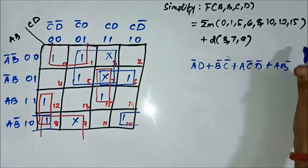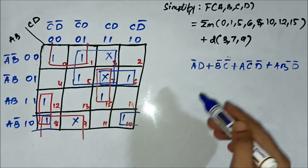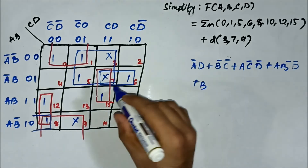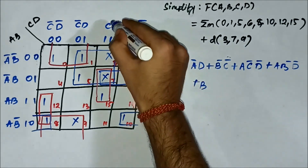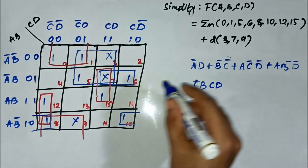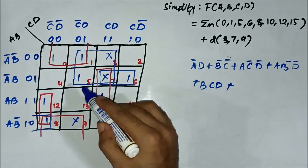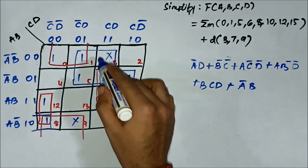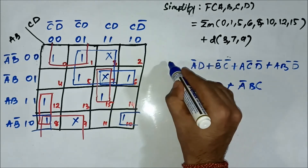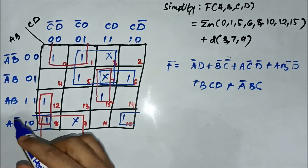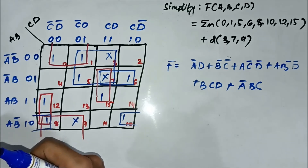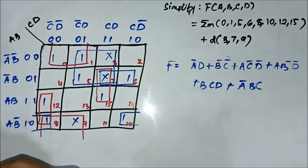For the pair 8 and 10: horizontal side gives A·B̄, vertical side gives D̄, so A·B̄·D̄. For the pair 7 and 15: horizontal side gives B common, vertical side gives C·D common, so B·C·D. For the pair 6 and 7: horizontal side gives Ā·B common, vertical side gives C common, so Ā·B·C. The simplified Boolean expression is: Ā·D + B̄·C̄ + A·B̄·D̄ + Ā·B·C + B·C·D + A·C̄·D̄.